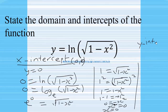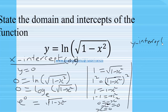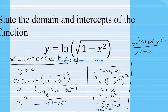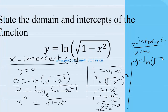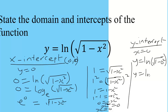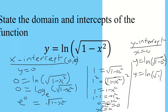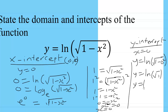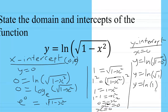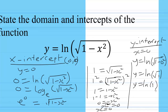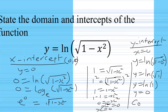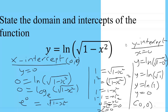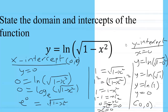For the y-intercept, we put x equals 0 into y equals ln of the square root of 1 minus 0 squared. That gives y equals ln of the square root of 1, which is ln of 1. The square root of 1 is 1, and the natural logarithm of 1 is 0, so the y-intercept is also (0, 0).